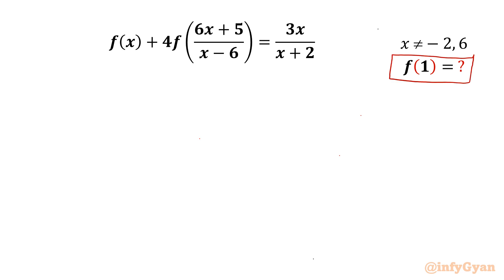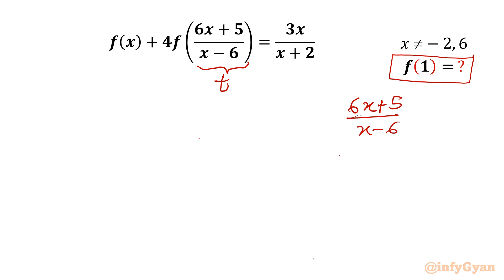The denominator cannot be 0, so x cannot be -2 or 6. The function is mapped from real to real. Let us get started by the very popular method of substitution. I will consider (6x+5)/(x-6) = t.